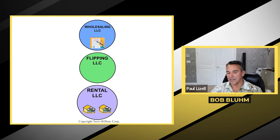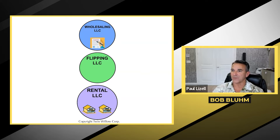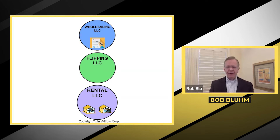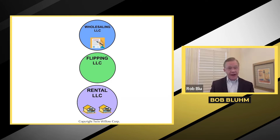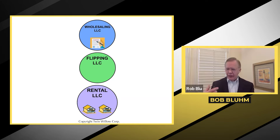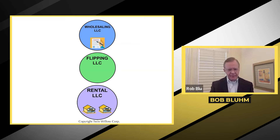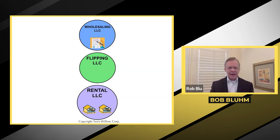Quick question on that, Bob — is it still done like an S corporation even with passive income, or is it better to take it a different way? Well, which entity are we talking about? For the rental LLC, since it's passive income — no, we would never use an S-corp designation for a rental property. That would really harm your taxes, increase your taxes more, not decrease them. So we would not use an S-corp for the rental property LLC.